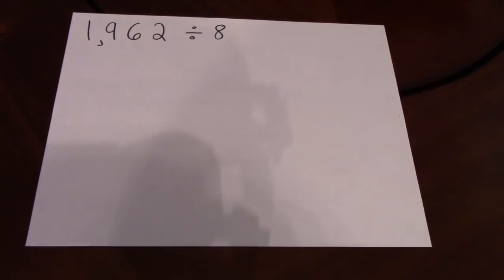Let me show you another way. Alright, 1,962 divided by 8. First things first, I'm a realist. Second things second, let's see how many place values we have.